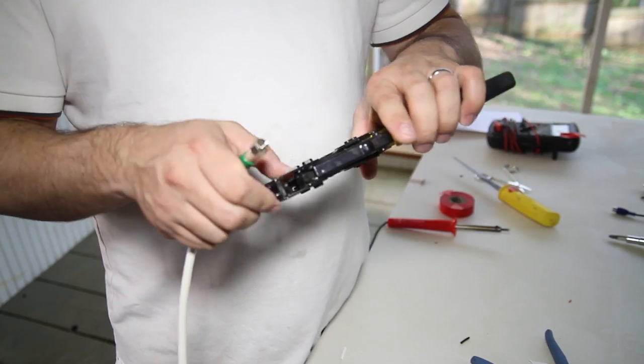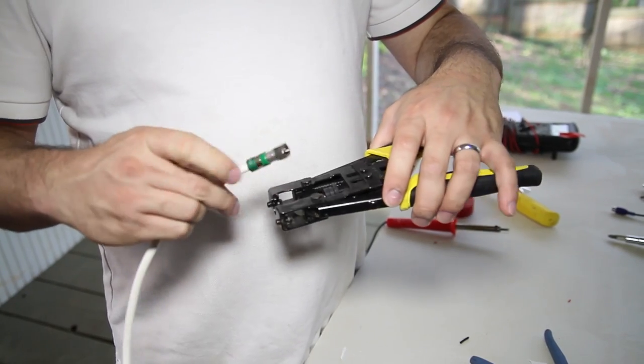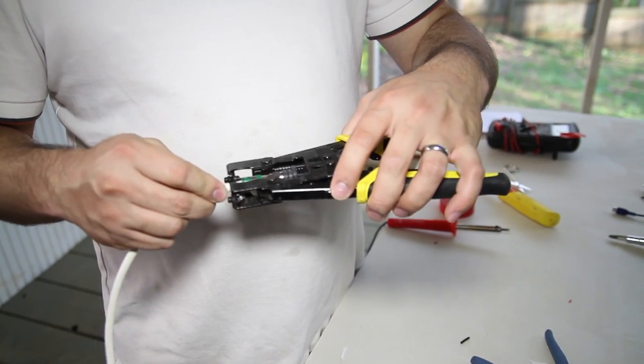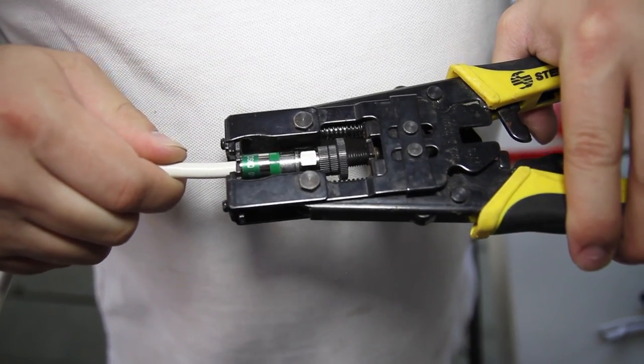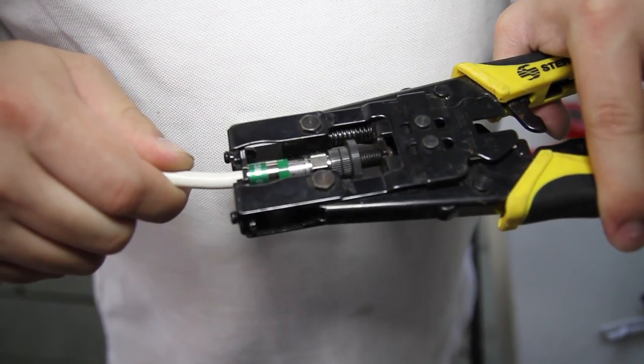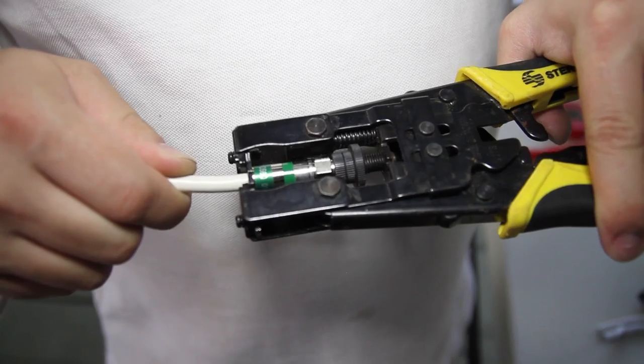We will put this connector into our crimp tool to lock everything in place, applying gentle pressure that will squeeze and lock this compression fitting into place.